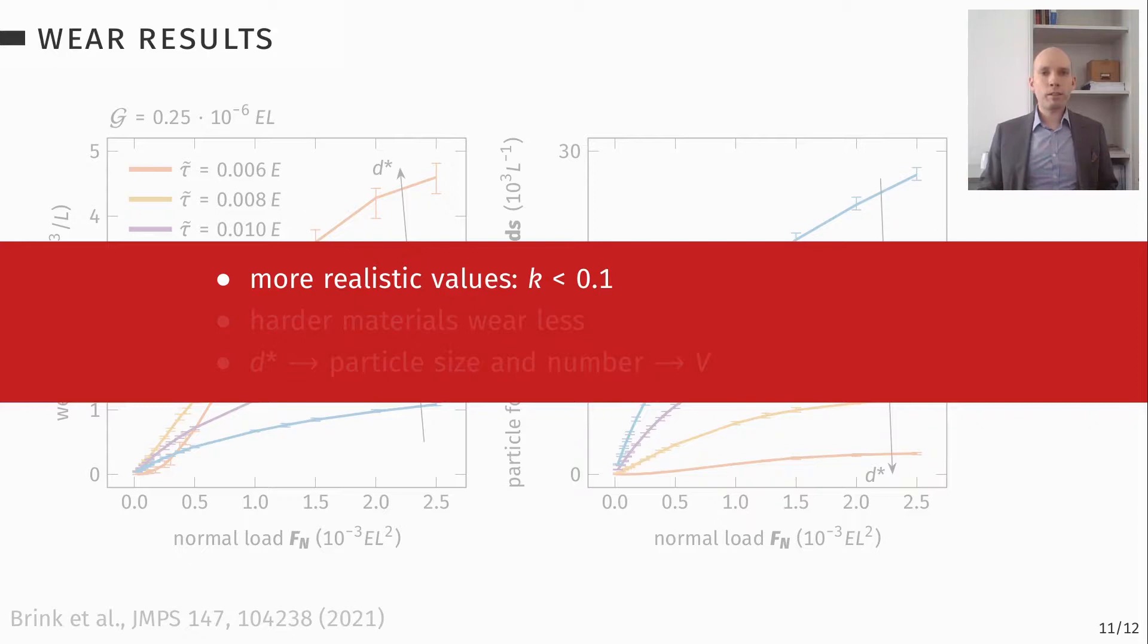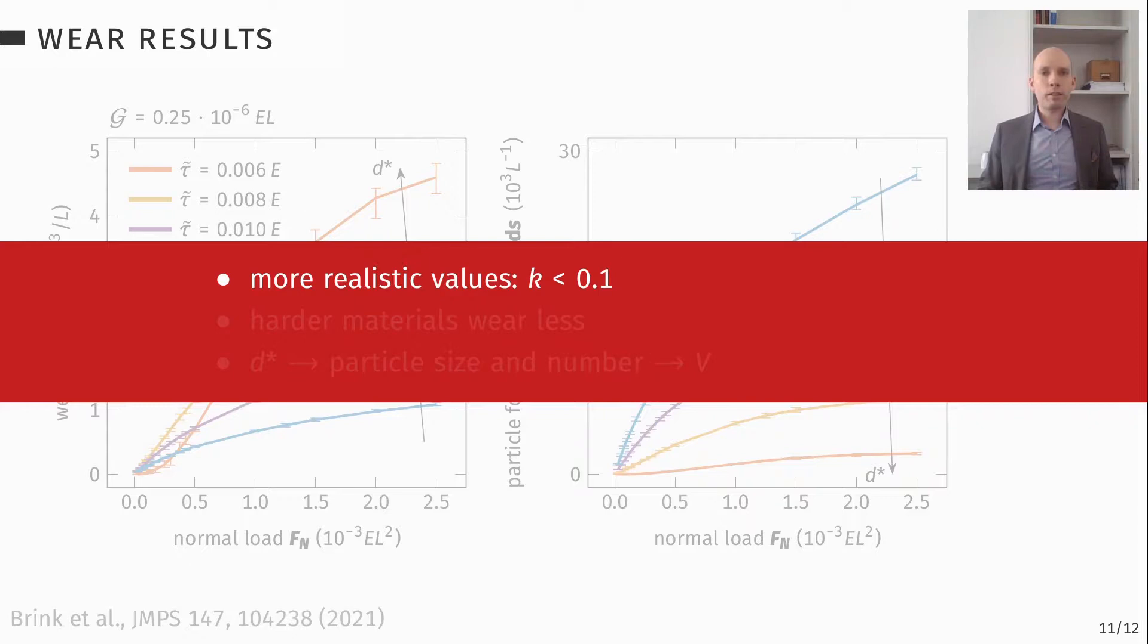So to summarize this part, we can achieve somewhat realistic values of the wear coefficient without fit parameters. This model doesn't contain any fit parameters. It's only surface morphology, only material parameters. Harder materials in this model wear less. This is expected from experiment. And we can nicely connect a microscopic mechanism represented by this d star, by this fracture criterion for wear particle formation, to the number and size of wear particles. And the number and size of wear particles obviously give you the macroscopic wear volume.